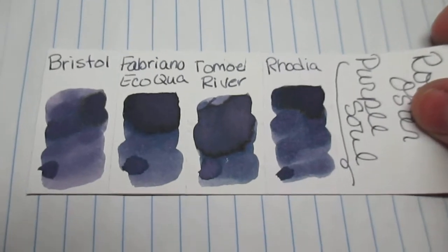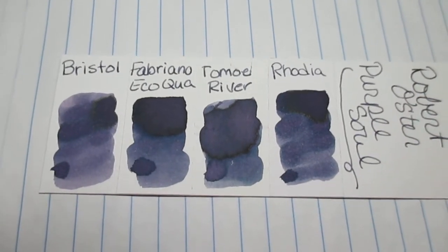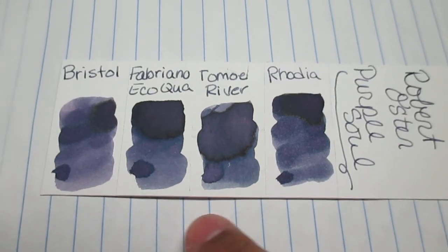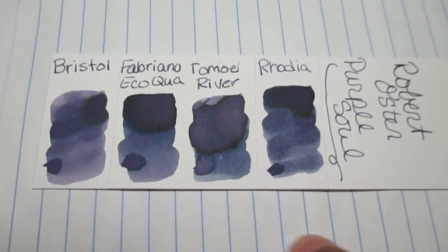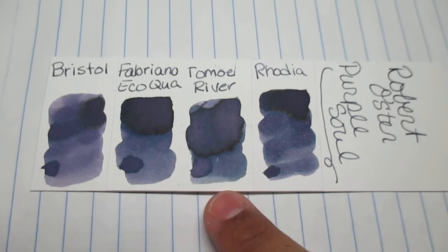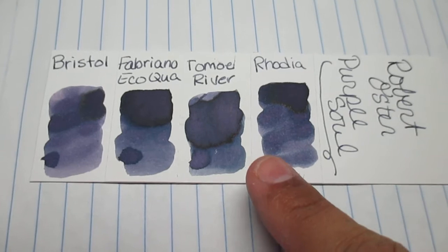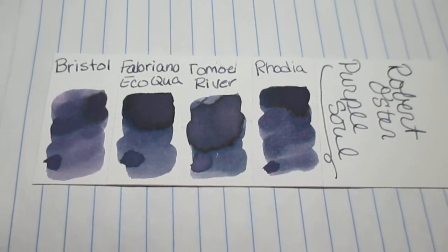Let's go with our color chart. This is my color chart. I put it on Bristol paper, and I put strips of Fabriano, Tomoe River, and Rodeo paper on it, so you can see how the ink reacts on the paper side by side.